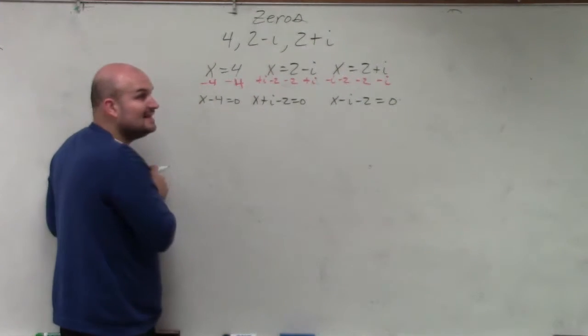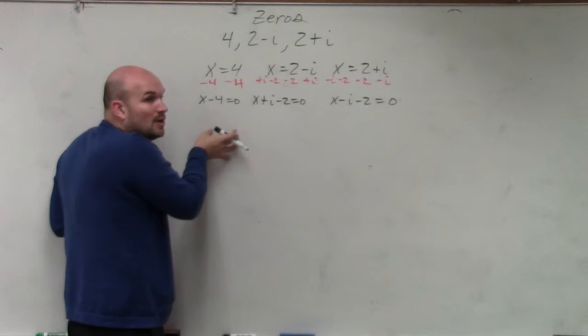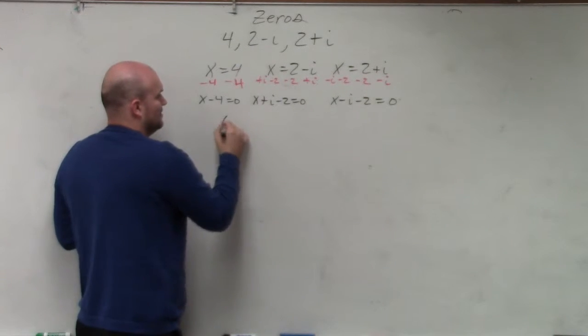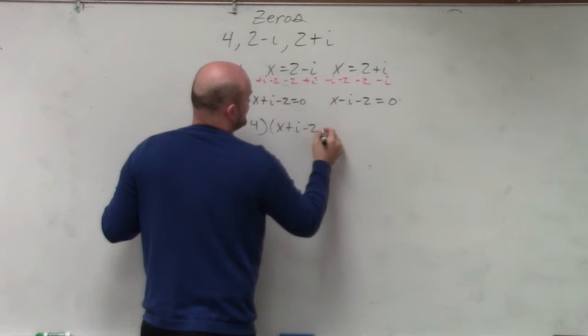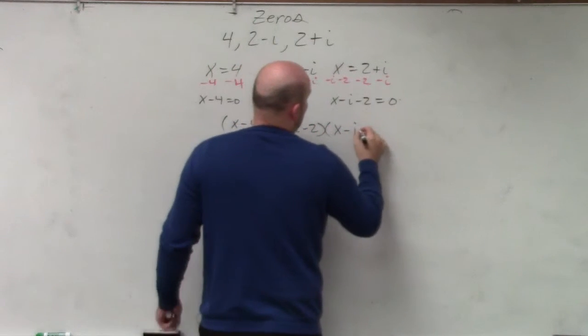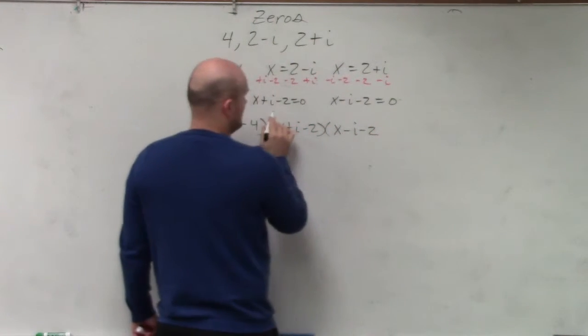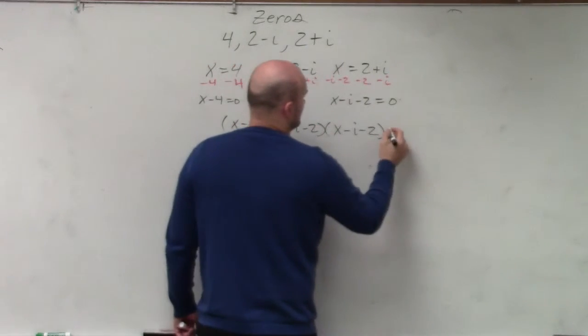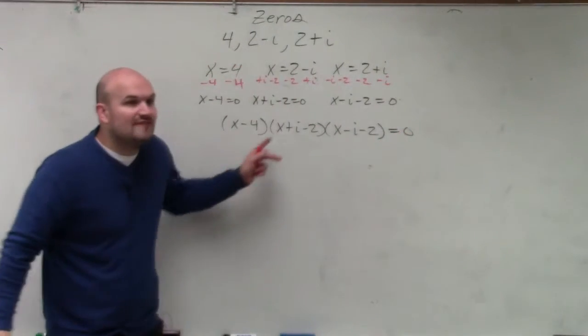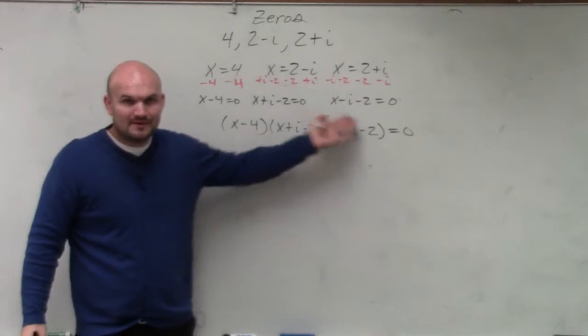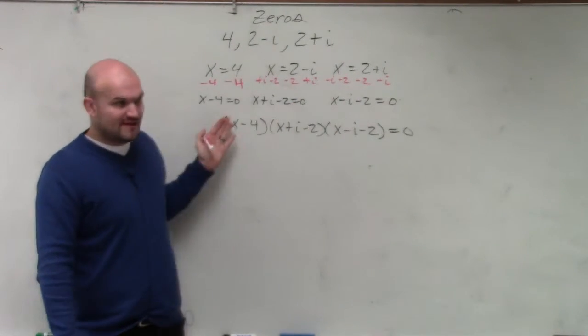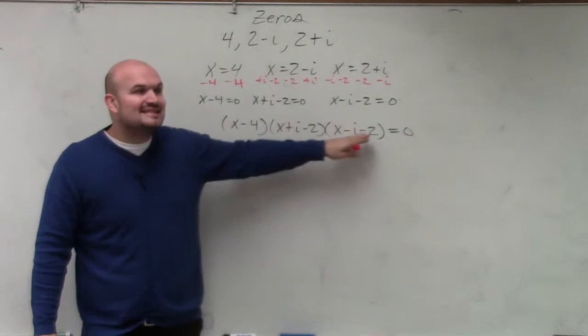Well, if these are your zeros set equal to 0, that's what your factors are. x minus 4, x plus i minus 2, x minus i minus 2. These are what you call the factors, right? These are your factors. These are your zeros. These are now your factors.